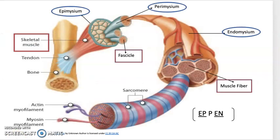Skeletal muscles vary considerably in size, shape, and arrangement of their fibers. We range from extremely tiny strands, such as the smallest muscle in our body called the stapedius muscle of the middle ear, measuring approximately six millimeters in length, to large masses such as the muscles of the thigh. The longest muscle in the human body is called the sartorius muscle, and its length goes up to 600 millimeters.